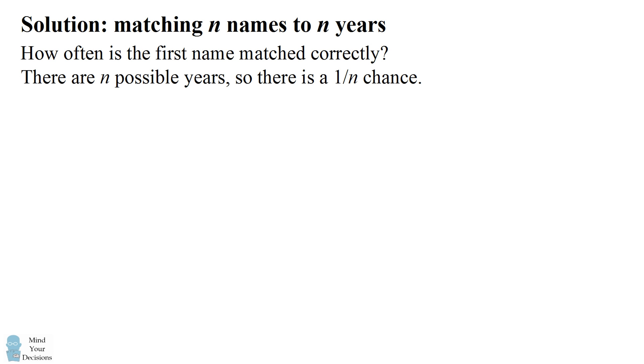Well what's so special about the first name? In fact, any single name has a 1 over n chance of matching on average. The first name that you match, that's just a random choice, so you could make any of the names the first name. And so by symmetry, each name has a 1 over n chance of matching on average.